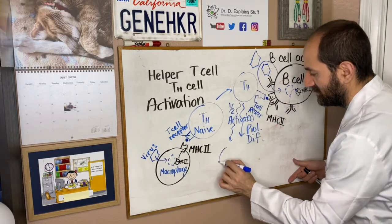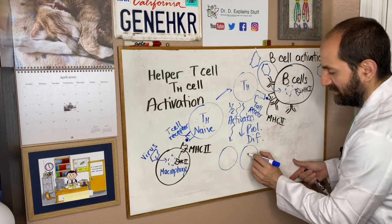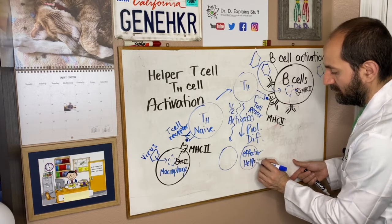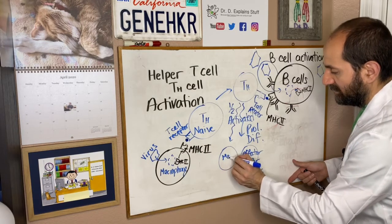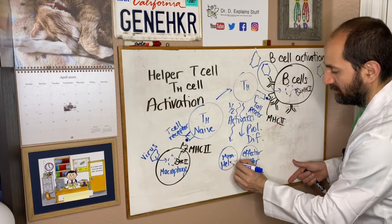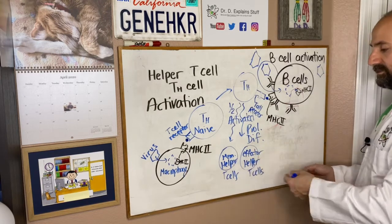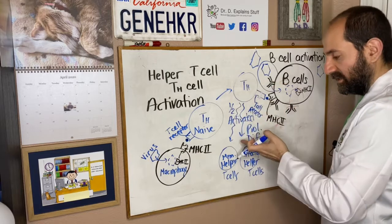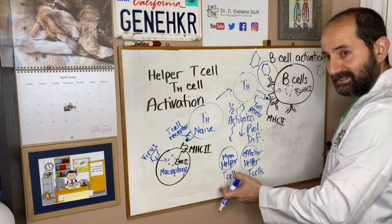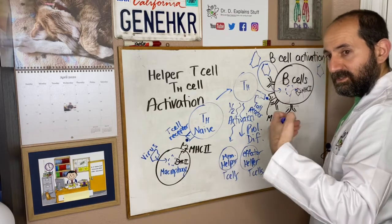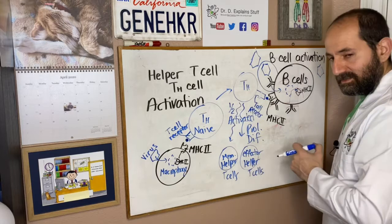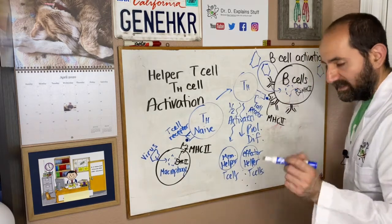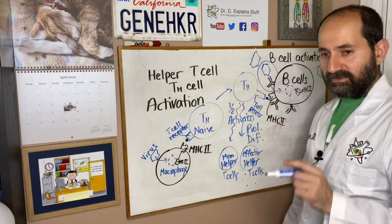So the helper T cell proliferates and differentiates. It's going to copy itself, because now it realizes it has a very important T cell receptor — one that can recognize this intruder, this virus. So it's going to make many, many copies of itself: effector helper cells and memory helper T cells. Once it gets that second handshake, it multiplies and differentiates. Some cells become memory cells that linger in the body to remember the insult for next time, so you become immune to that virus. Other effector cells release cytokines and other hormones required to fight this viral infection now.